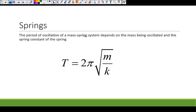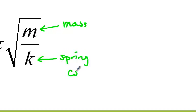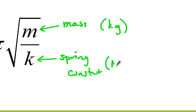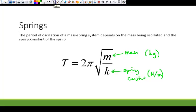The period of oscillation of a mass-spring system depends on the mass being oscillated and the spring constant K. Mass is measured in kilograms and the spring constant is in newtons per meter. Those two units together give us the period in seconds, which is what we need to find the time.